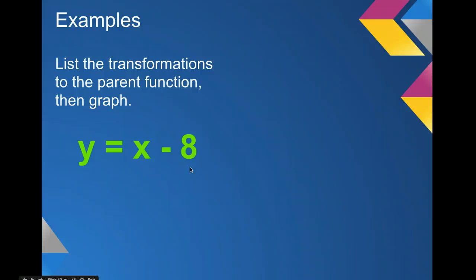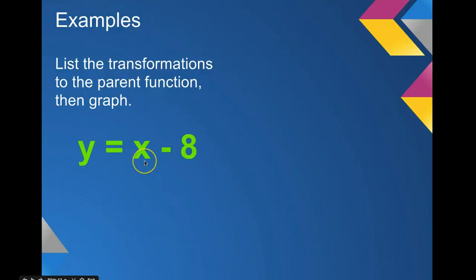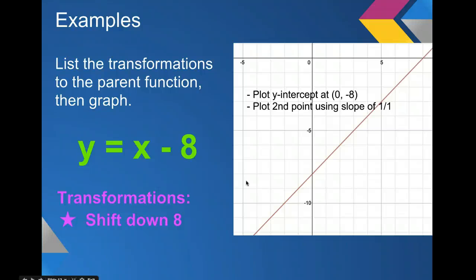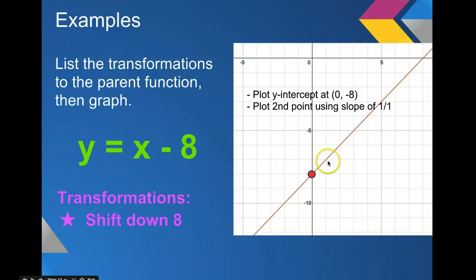Let's do some examples. In your practice, you'll be given a linear equation and you'll have to list the transformations and then graph the function. For y equals x minus 8, the only transformation is the minus 8, which is a shift down of 8. To graph this, first plot the y-intercept at 0, negative 8. Then for a second point, use the slope — no transformation, so it's 1 over 1. Go up 1 and over 1 for the second point, and draw the line.